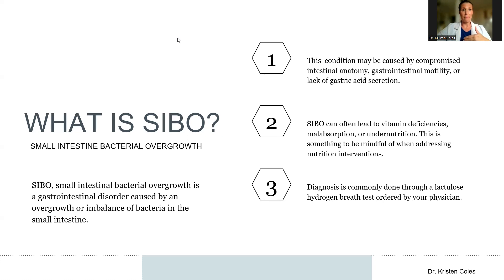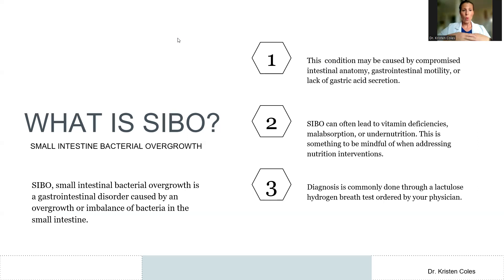SIBO can arise from many different causes. It can arise due to low stomach acid or drugs that suppress stomach acid, or medications that slow down the GI system's function. It can also arise from an improper microbiome in the large intestine, from abdominal surgery or adhesions, or from your own specific anatomy and other situations.